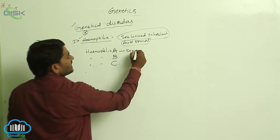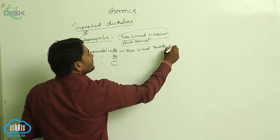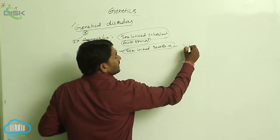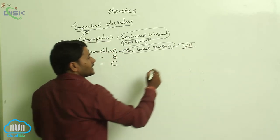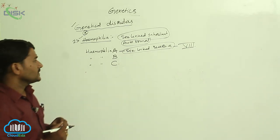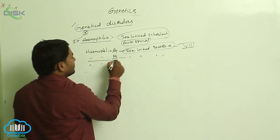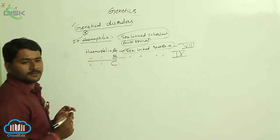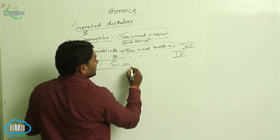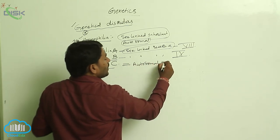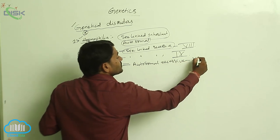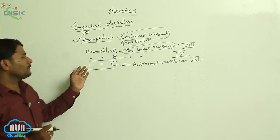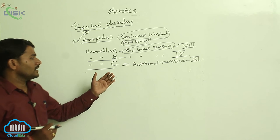Hemophilia A is a sex-linked recessive disorder. When the recessive allele is present, it leads to the lack of the eighth blood clotting factor. Hemophilia B is also a sex-linked recessive disorder, caused due to the lack of the ninth blood clotting factor. Hemophilia C is an autosomal recessive disorder, caused due to the lack of the eleventh clotting factor.